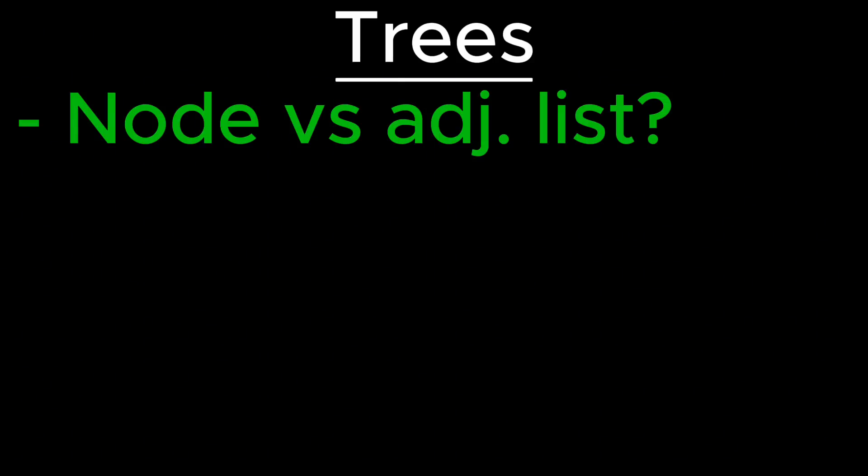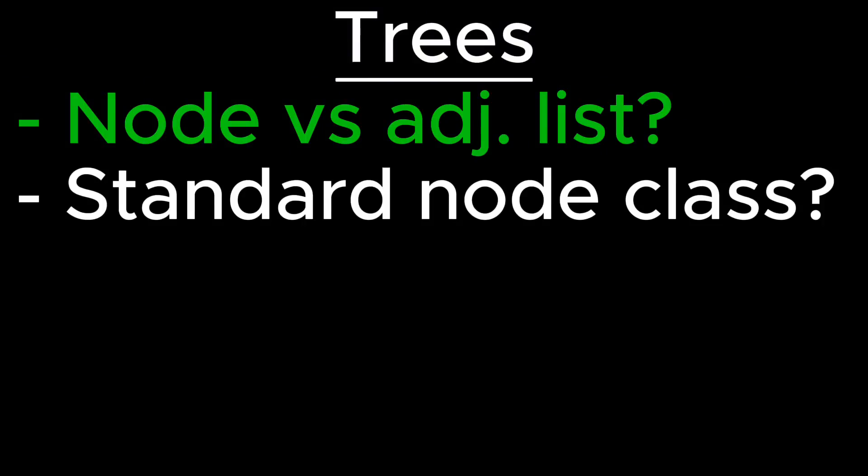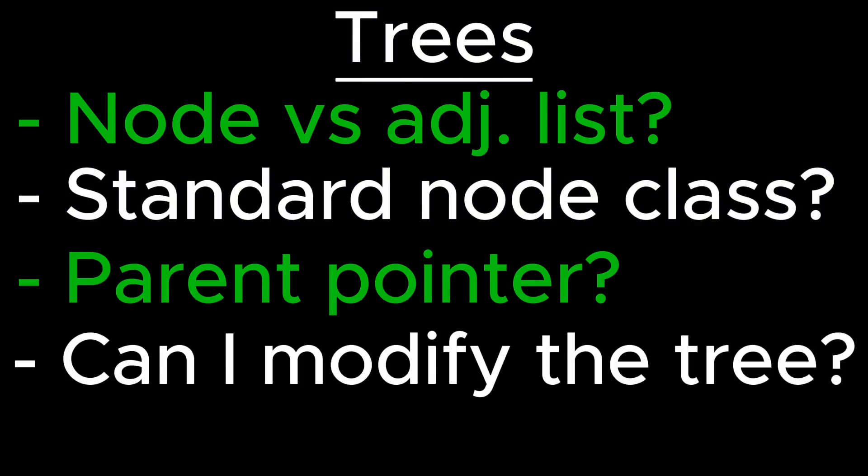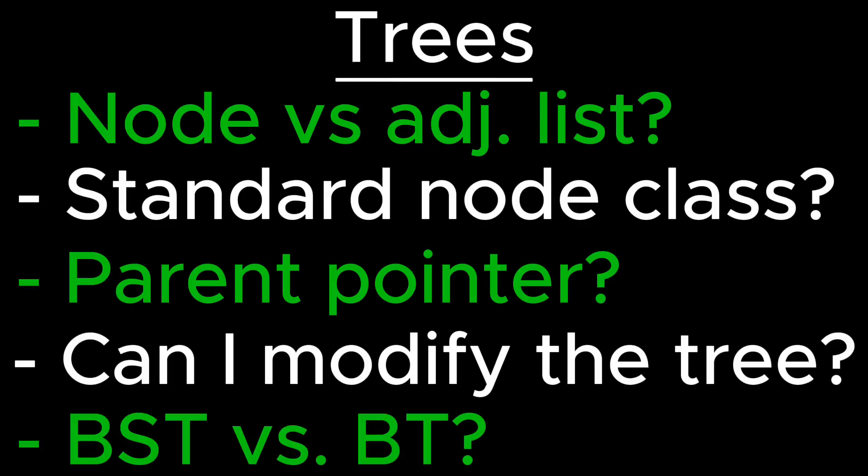When it comes to trees, you can always ask about, how will the tree actually be given to us? Will it be given to us as a node class, where you have a value, a left and a right pointer? Or will it be given as an adjacency list data structure? Can we assume that a node will have a value and an optional left and right child pointer? Does the node have potentially a parent pointer? Can we modify the node or add any fields such as a parent pointer? Is it a binary tree or a binary search tree? Can the tree contain duplicate values?